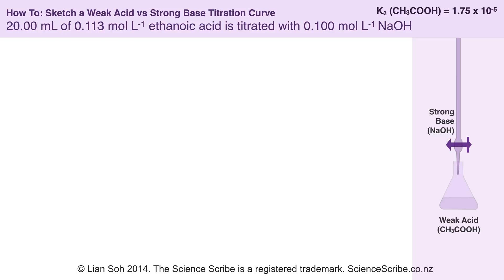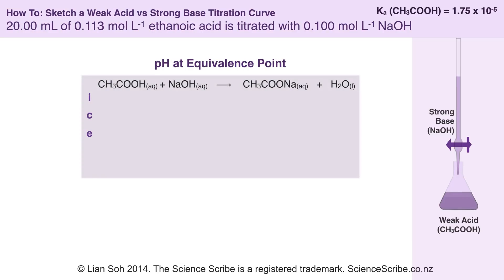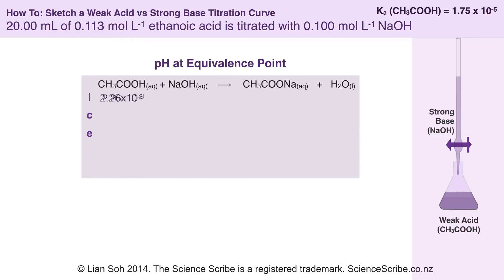The next point I'm going to calculate is the pH at equivalence point. At equivalence point, I would have added just enough sodium hydroxide to react with all my initial weak acid. To do my pH at equivalence point, I start off with an equation and an ICE table. The ICE table lets me calculate the molar amount of initial weak acid I had — I'm going to use N = C × V for that. Remember, all volumes need to be in liters. Since at equivalence point I'm using just enough sodium hydroxide in a 1-to-1 ratio, I should have the same amount of sodium hydroxide added as well.